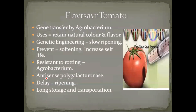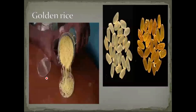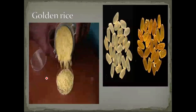We can also transport the tomatoes from our state to far states like Delhi. Because the traveling duration is more, during that duration the fruit would otherwise ripen. So they are using this polygalacturonase gene along with the Agrobacterium RDNA to delay ripening during transport.